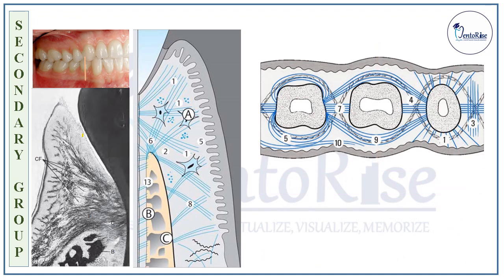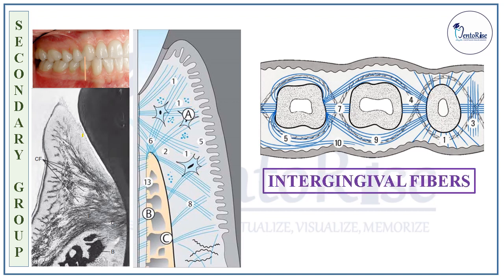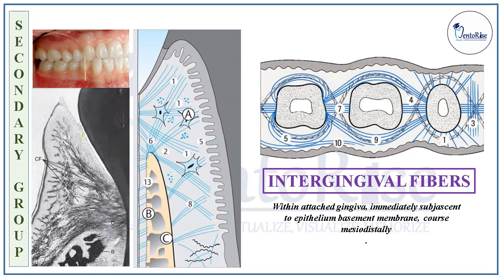The next category within the secondary group are the Intergenival fibers. These fibers are present within the attached gingiva, immediately subjacent to the epithelial basement membrane, and they course mesiodistally. These fibers provide support and contour to the attached gingiva.